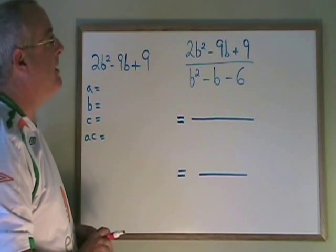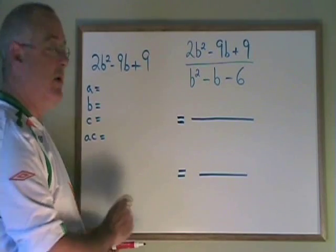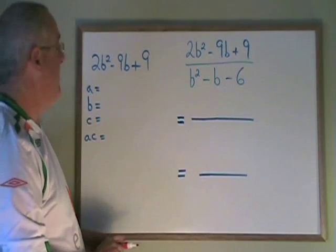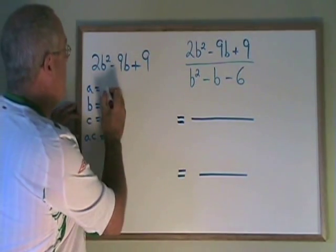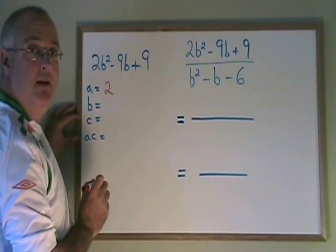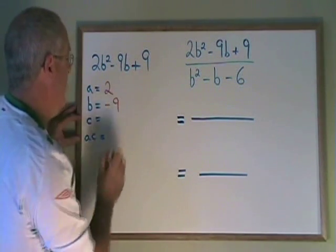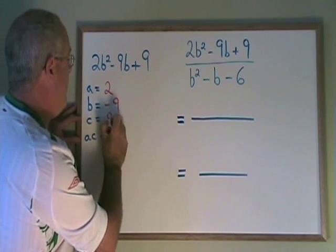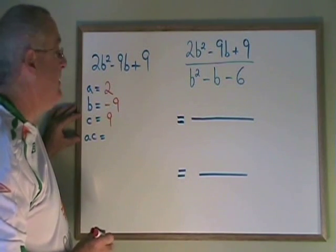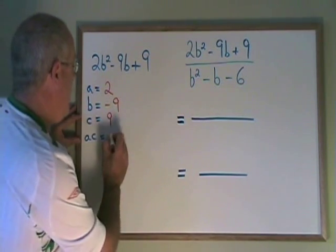The numerator is a complex trinomial, so I'm going to show its factoring over here. a is equal to 2, b is equal to negative 9, c is equal to positive 9, and the product ac is equal to 2 times 9, which is 18.